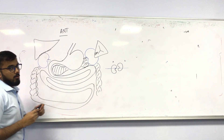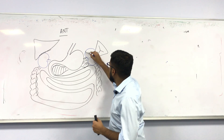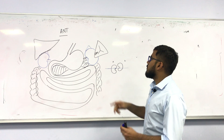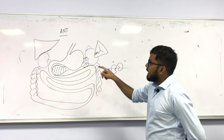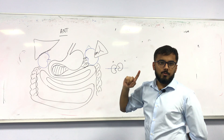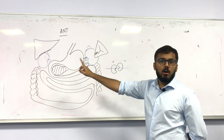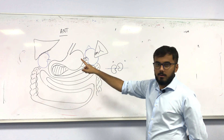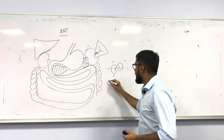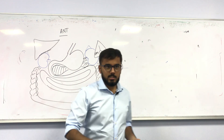Now look here — you also have the suprarenal gland on either side. Let's identify the anterior relations of the right kidney. On the right side you have the liver, so the first relation of the right kidney is the liver. The second relation is the small intestine.